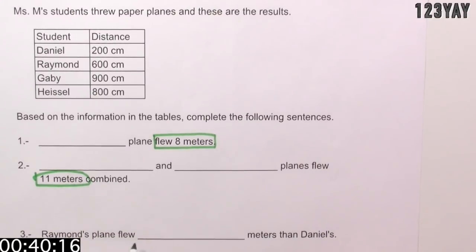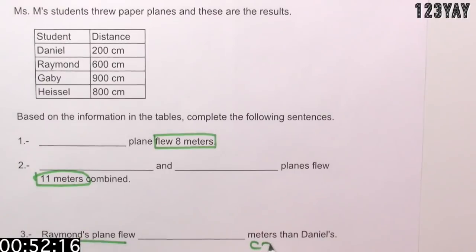And last but not least, Raymond's plane flew blank meters than Daniel's. So here, they're not telling us how much Raymond's plane flew, but they want to compare with Daniel's plane.